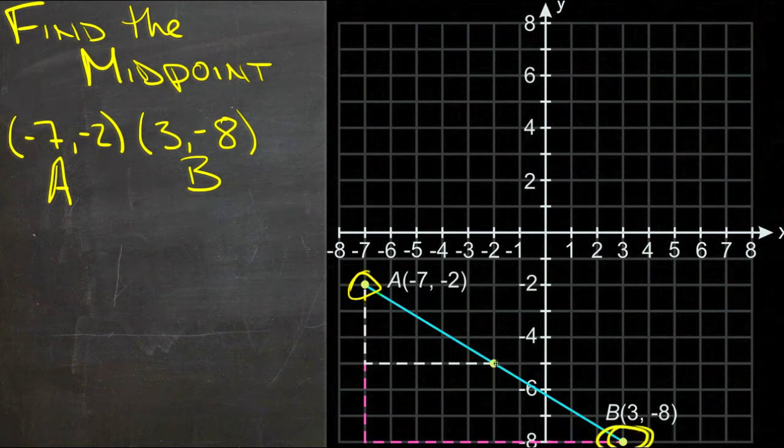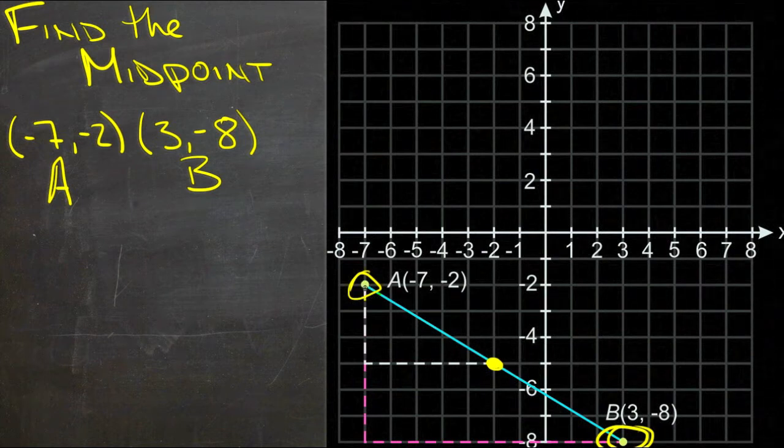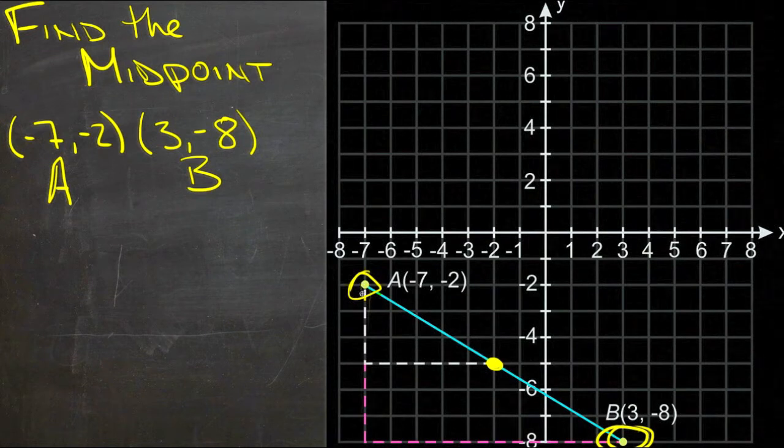And what we're doing is trying to find the point that's right in the middle of the two of them if we were to draw a straight line across. And the trick to doing it, we could actually use the Pythagorean Theorem and find the actual distance by calculating the short side here and the medium side.